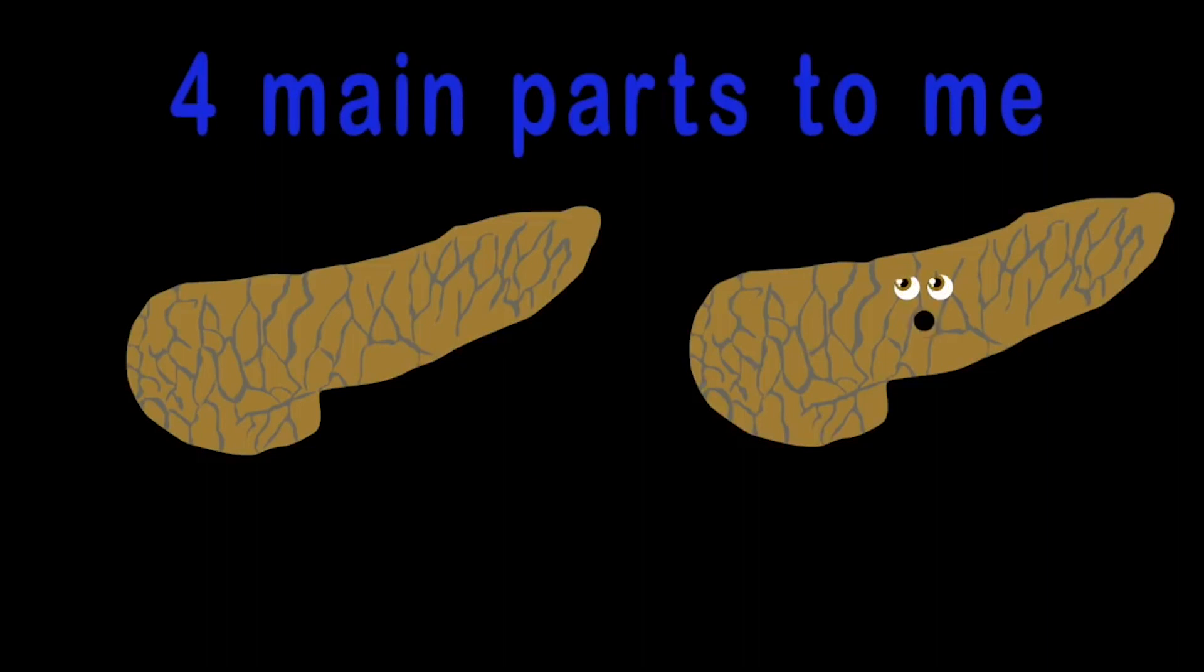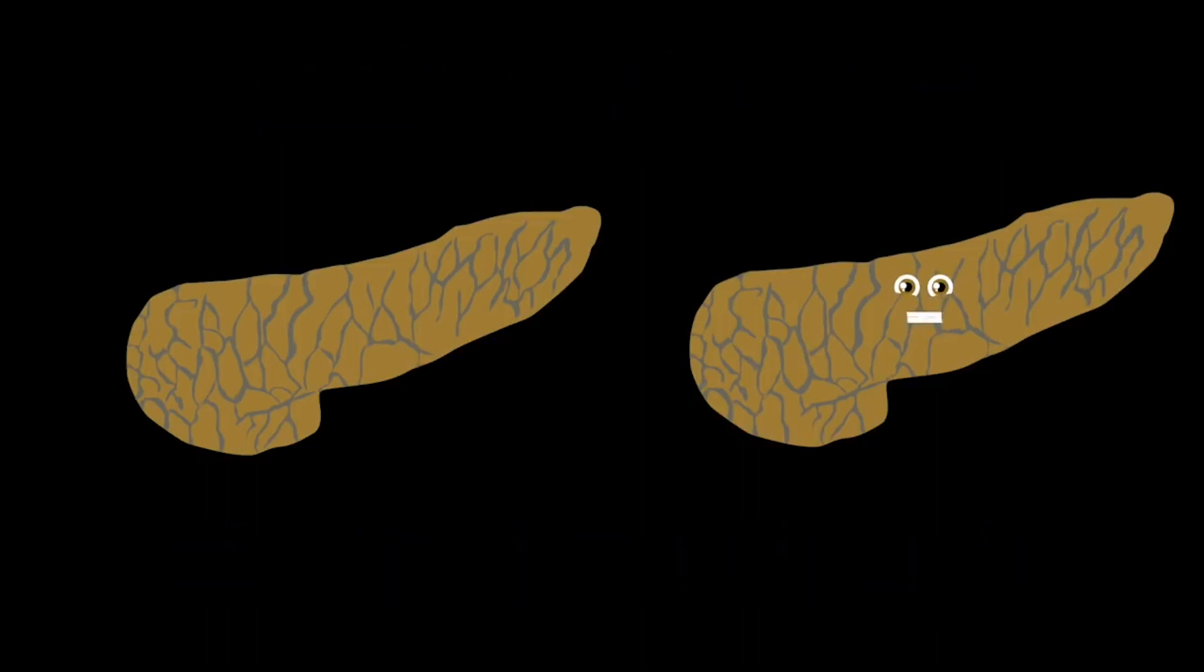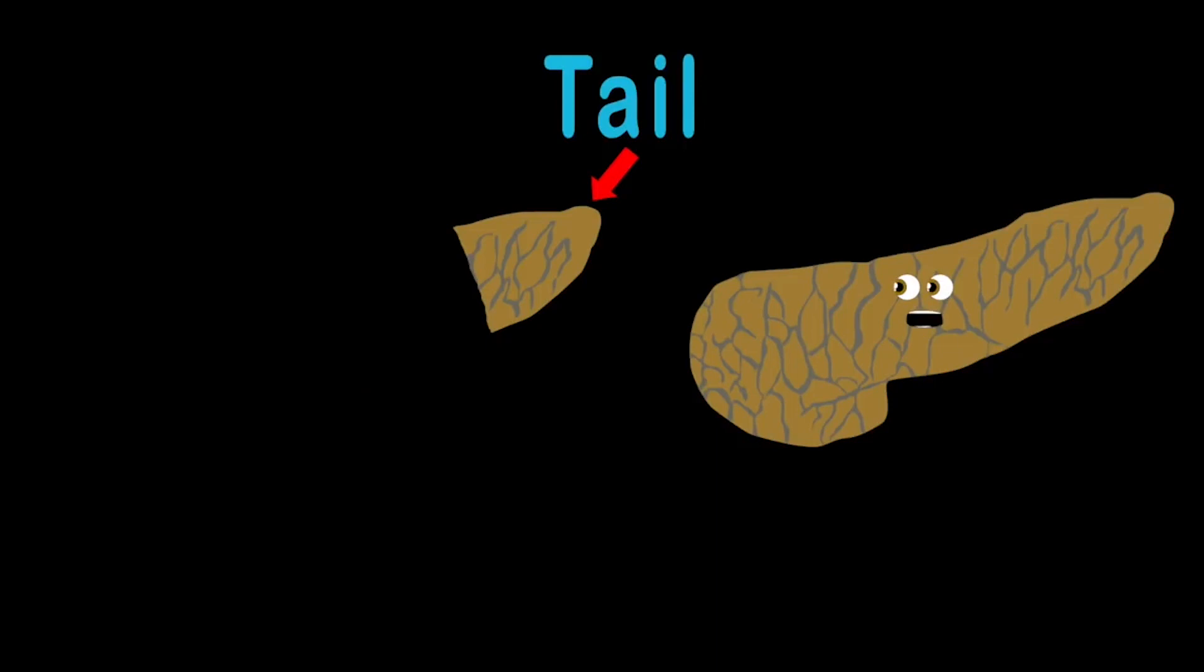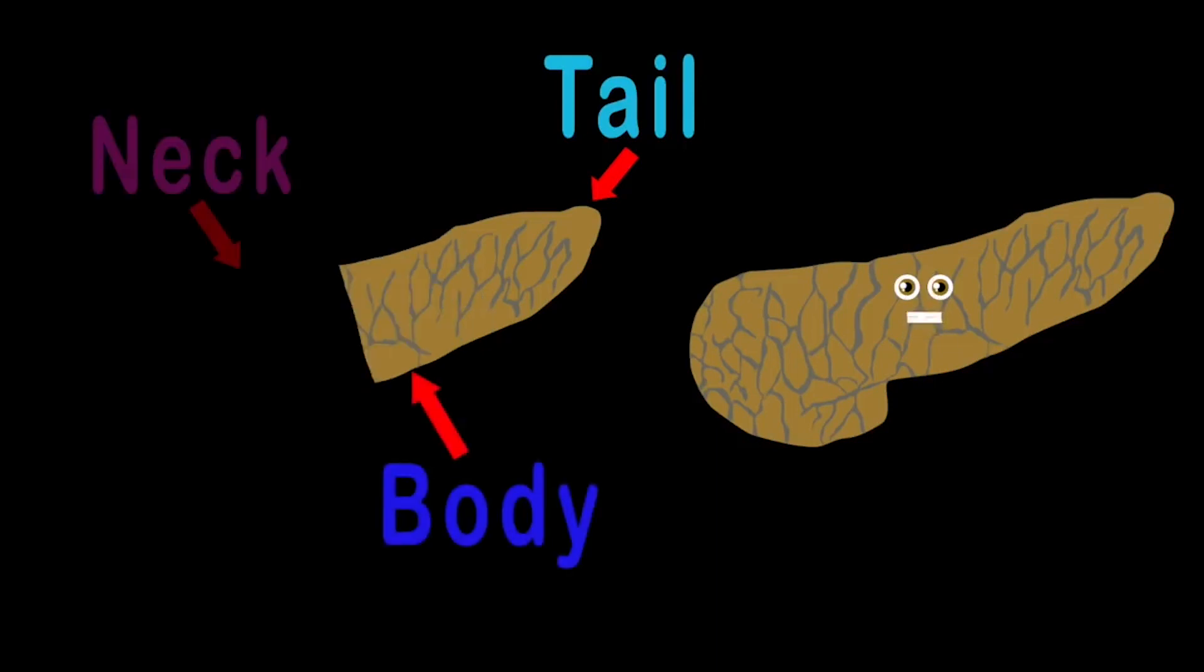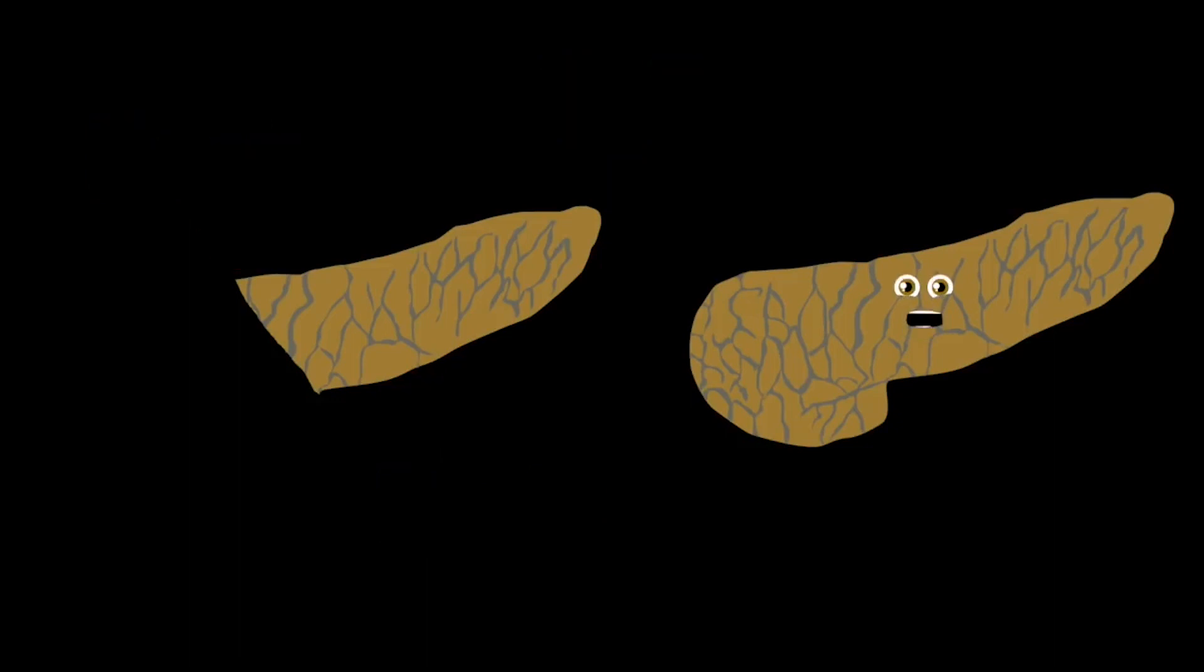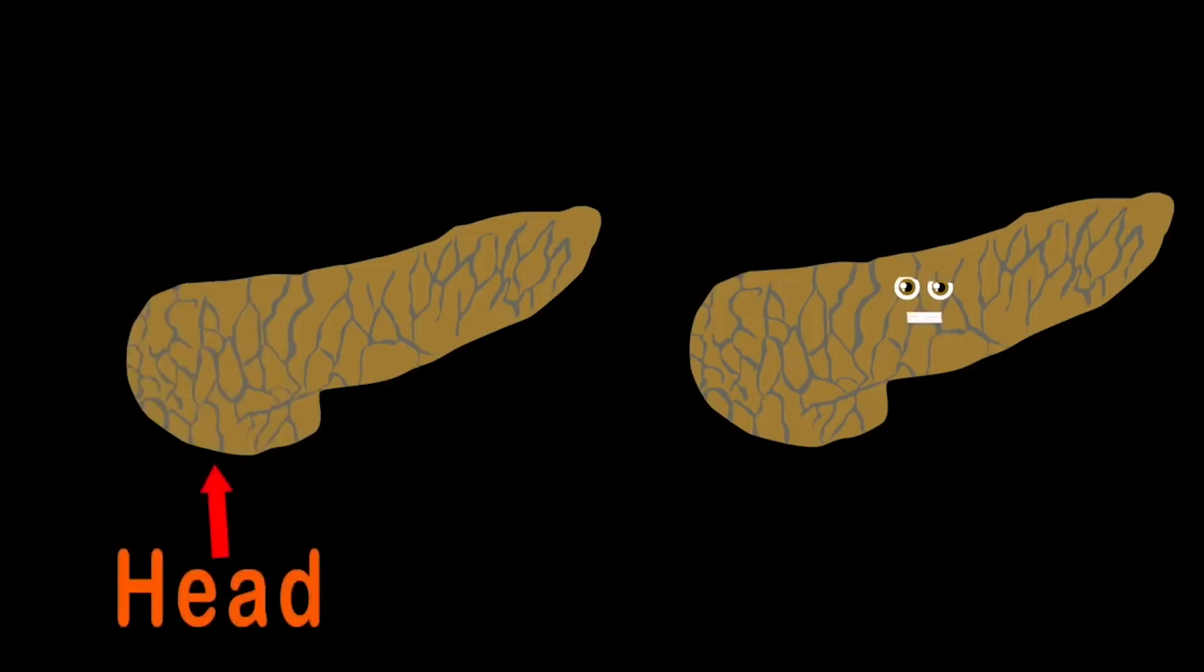The anatomy of your pancreas is the first thing I'll explain. There are four main parts to me, and a fifth that it will gain. We'll start with the tail, which sits to the left of your abdomen. This is connected to the body, onto the neck it does extend. The neck's attached to the head,